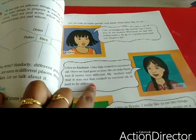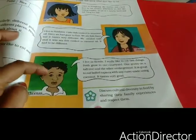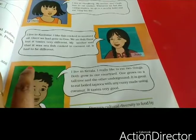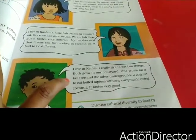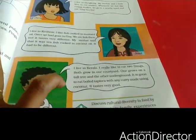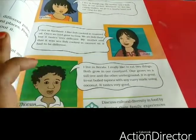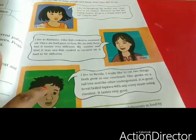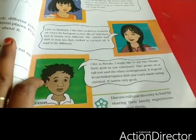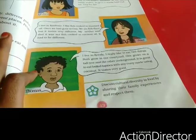Thomas is from Kerala. He says: 'I live in Kerala, I really like to eat two things. Both grow in my courtyard — one grows on a tall tree and the other underground.' He likes to eat tapioca with any curry made using coconut. He says the curry tastes very good.